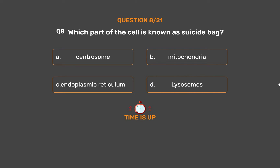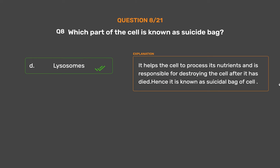The correct answer is Option D: Lysosomes. It helps the cell to process its nutrients and is responsible for destroying the cell after it has died. Hence it is known as the suicidal bag of the cell.